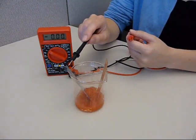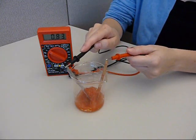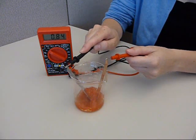Electrons flow from the zinc electrode through the tomato juice to the copper electrode and then through the wire to the multimeter and back again to the zinc.